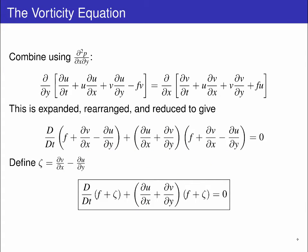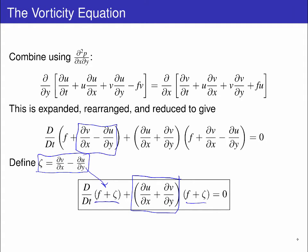At this point, we define zeta as equal to dv/dx minus du/dy, and make the substitution for zeta back into the previous equation, returning the total time derivative of f plus zeta, plus the horizontal divergence times f plus zeta, is equal to zero.